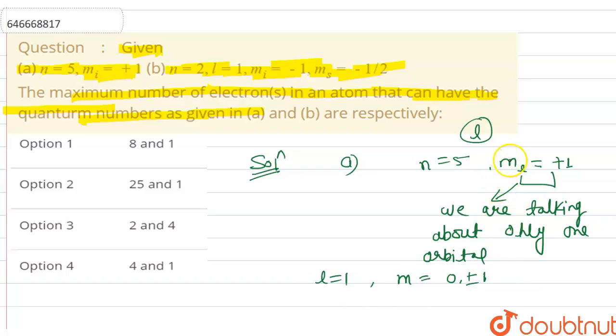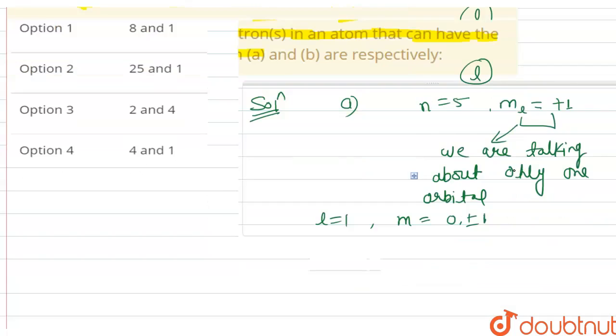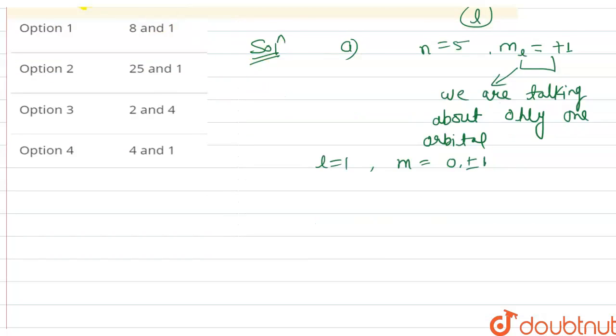l equals to 0 cannot be possible here because l equals to 0, so m should be equal to 0. So here s, p, d, f and g, these are the shells.